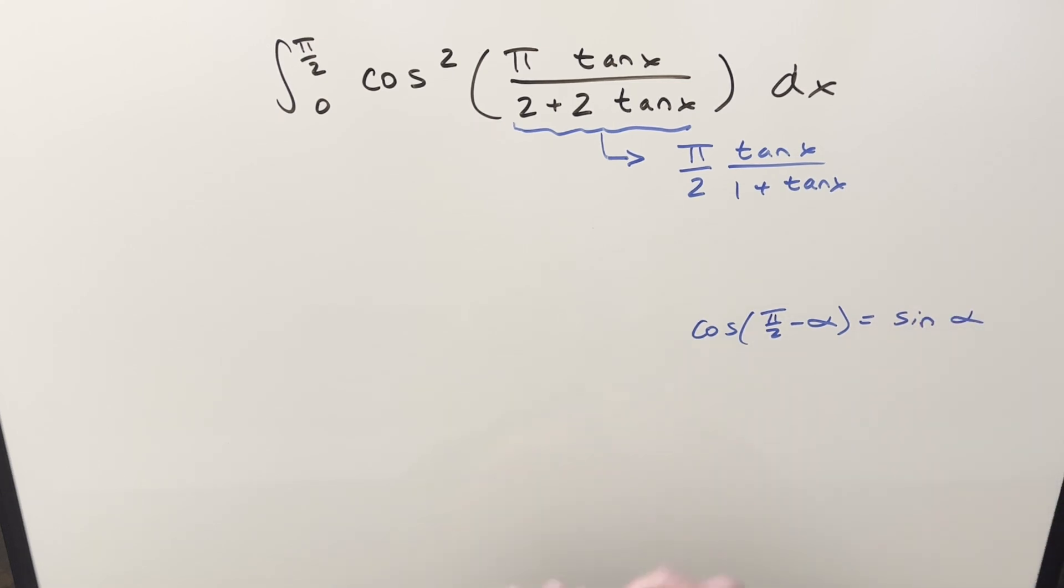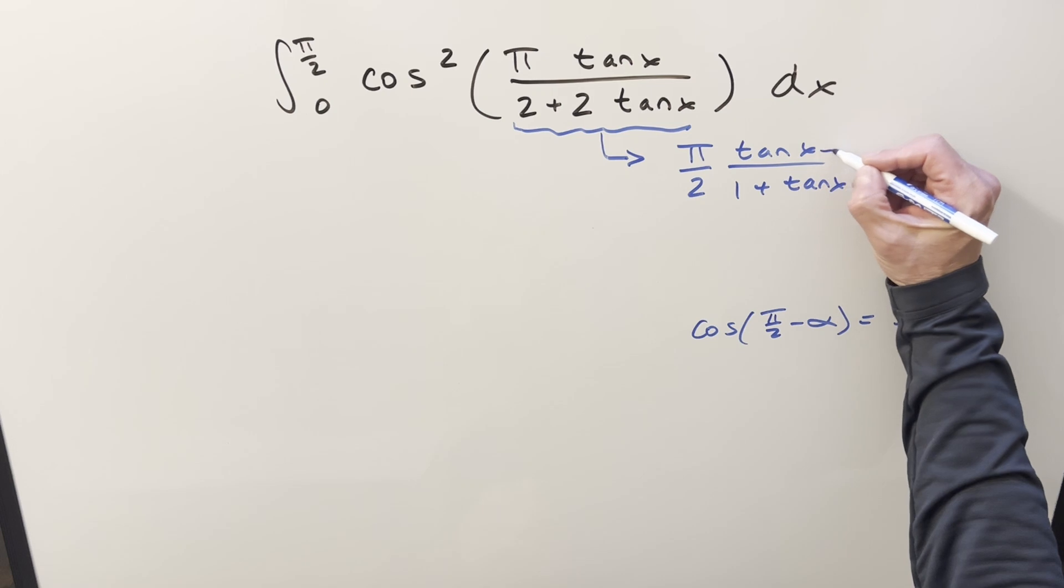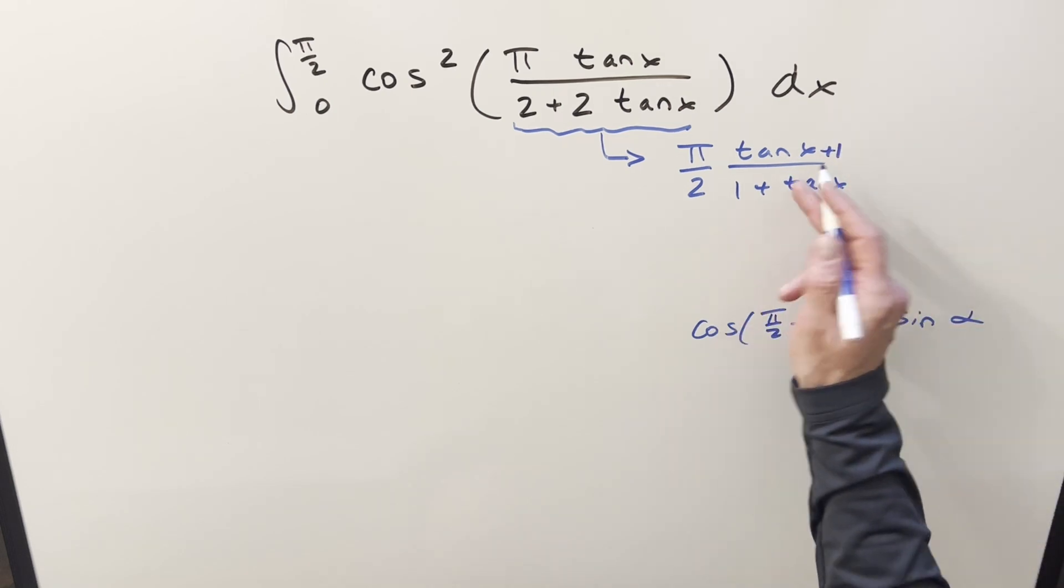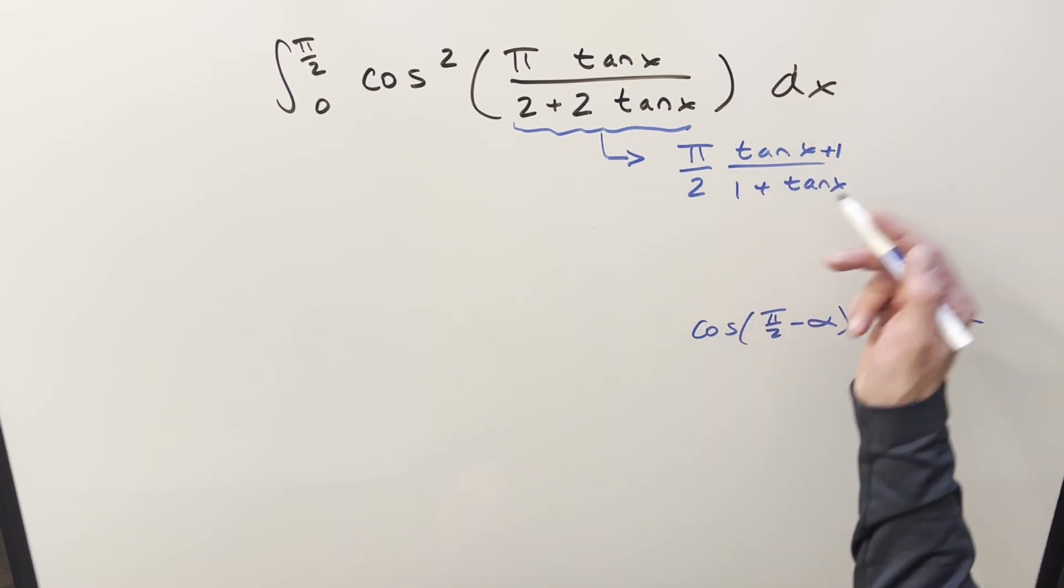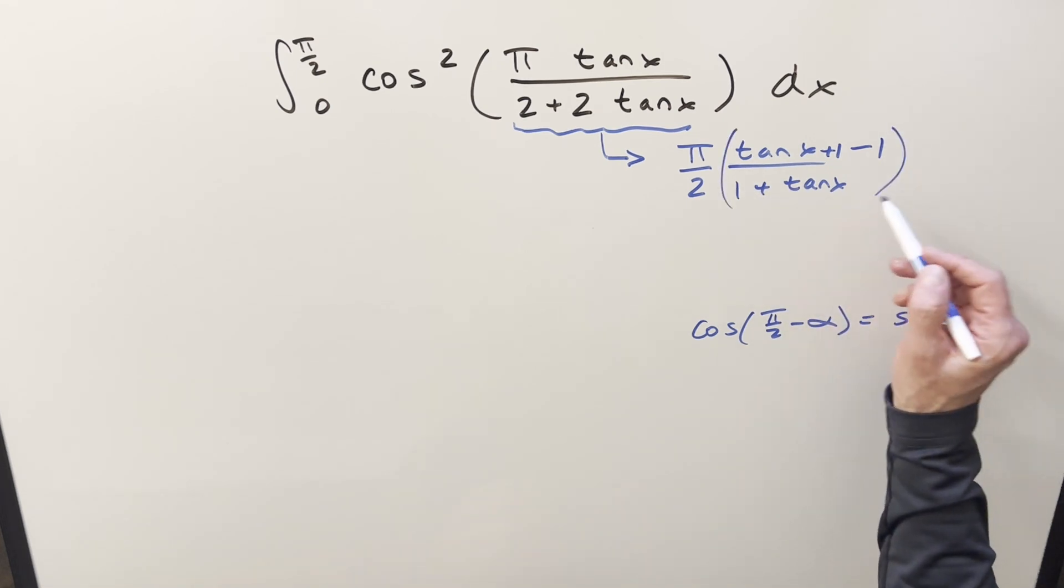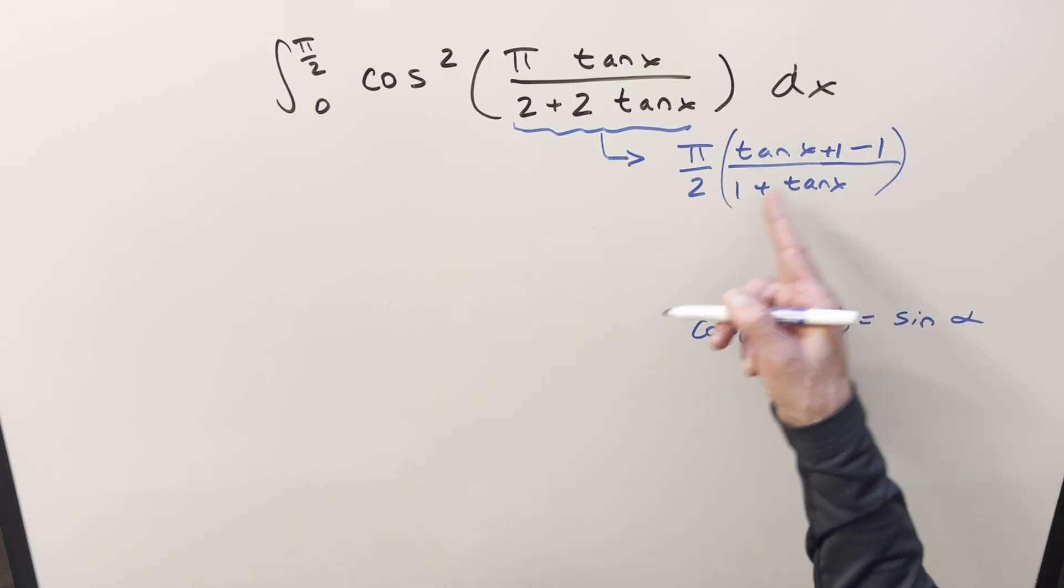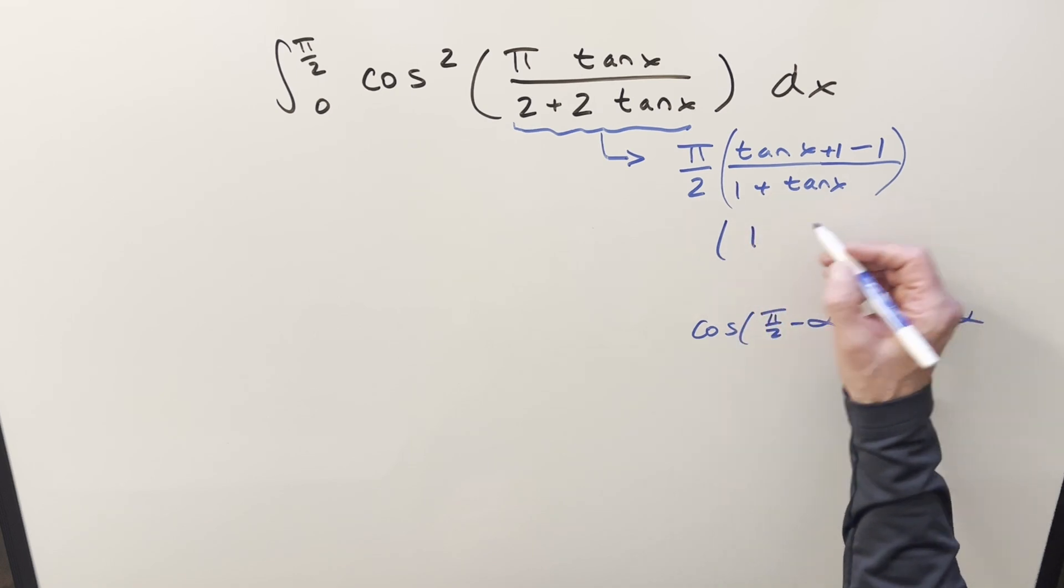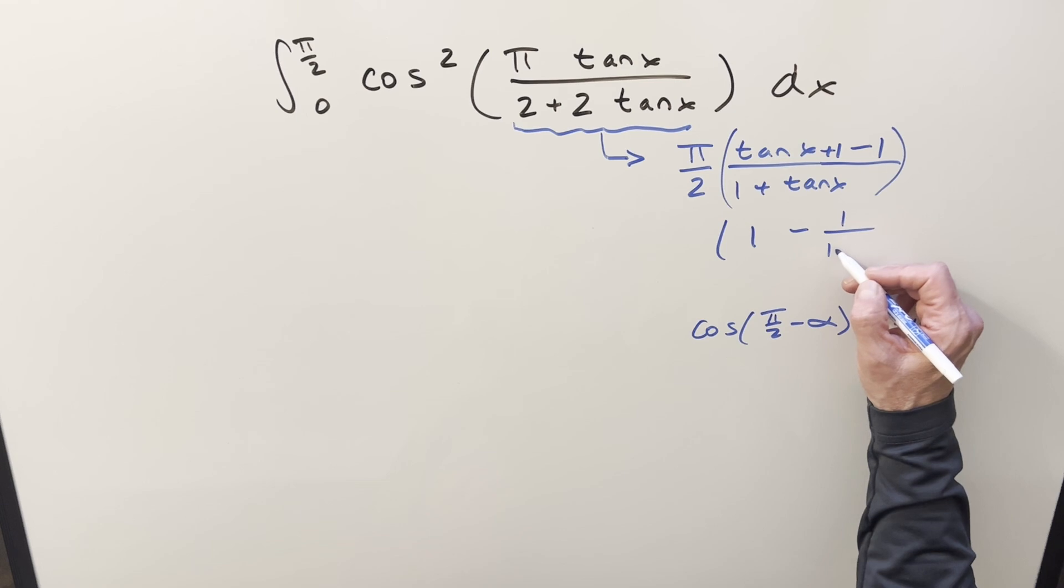What I can do here, if I add a plus 1, then this whole thing here is just a 1. I don't want to change it, so I can subtract 1. Then, breaking this up, this is all one fraction. So if we split this into two fractions, what's going to happen is this part becomes 1, the rest of it becomes minus 1 over 1 plus tan x.